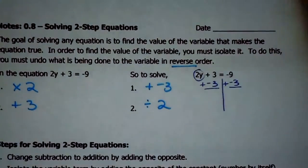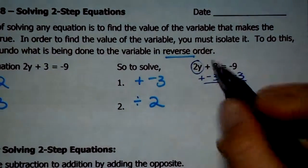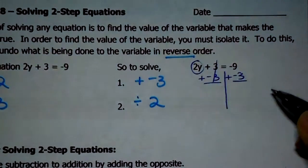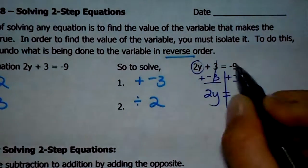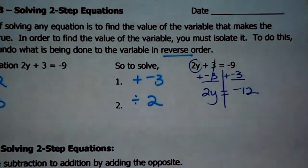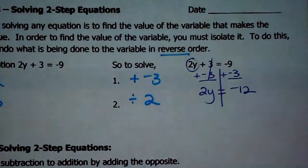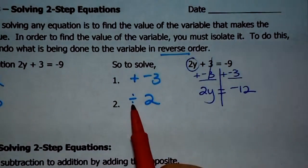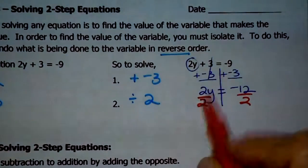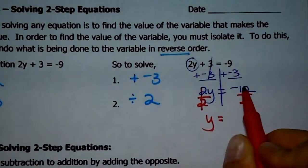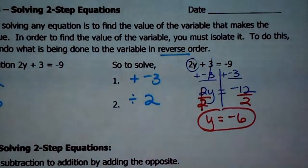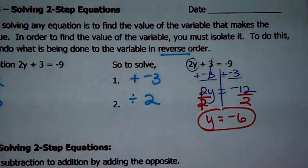Whatever you do to one side, you have to do to the other as well. When you combine like terms on this side, 3 plus negative 3 equals 0, and 2y plus 0 is 2y. Negative 9 plus negative 3 is negative 12. Before, with one-steps, we'd be done now, but there's something else happening to the variable — it's being multiplied by 2. Our second step tells us how to undo that: we divide each side by 2. 2 divided by 2 is 1, so 1y is y. And negative 12 divided by 2 is negative 6.